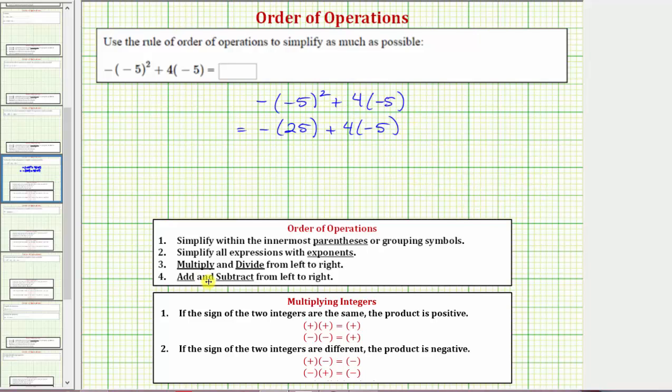Step three, we multiply and divide from left to right, followed by step four where we add and subtract from left to right. Notice how here we have four times negative five, which is equal to negative twenty.